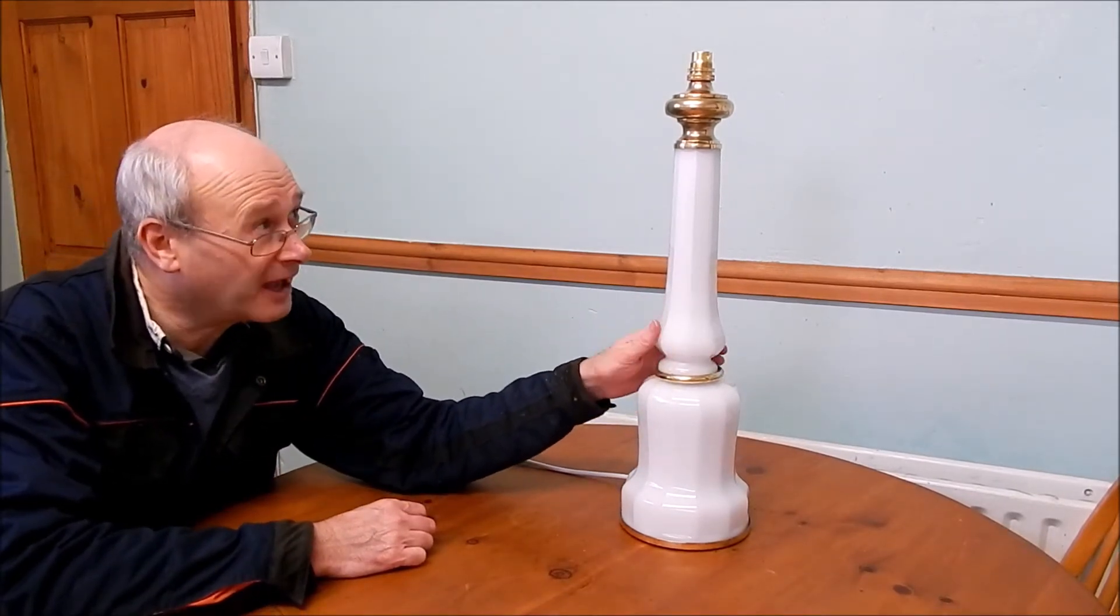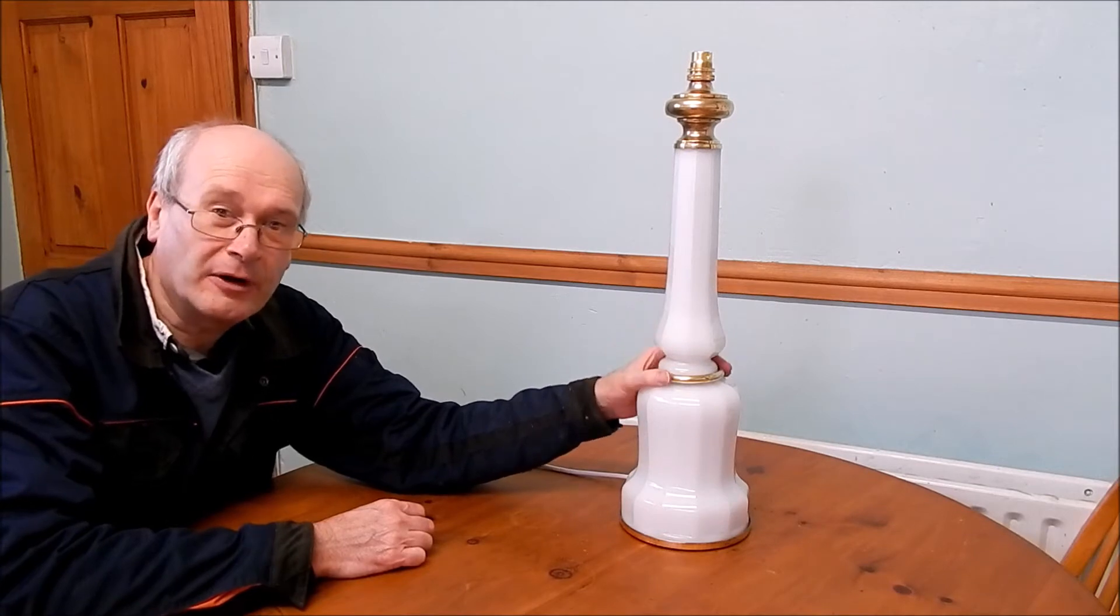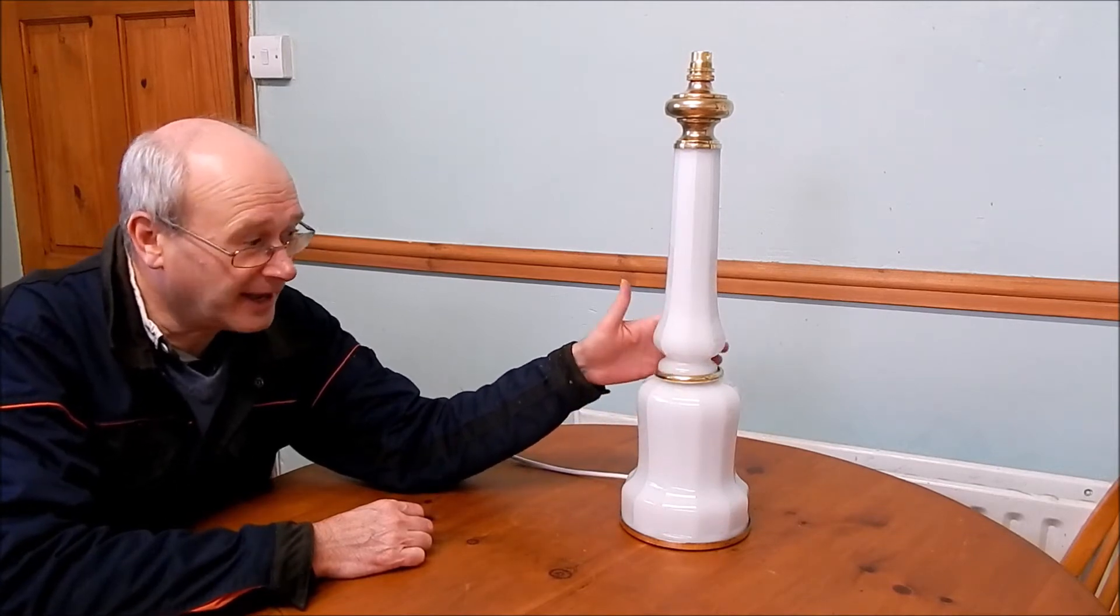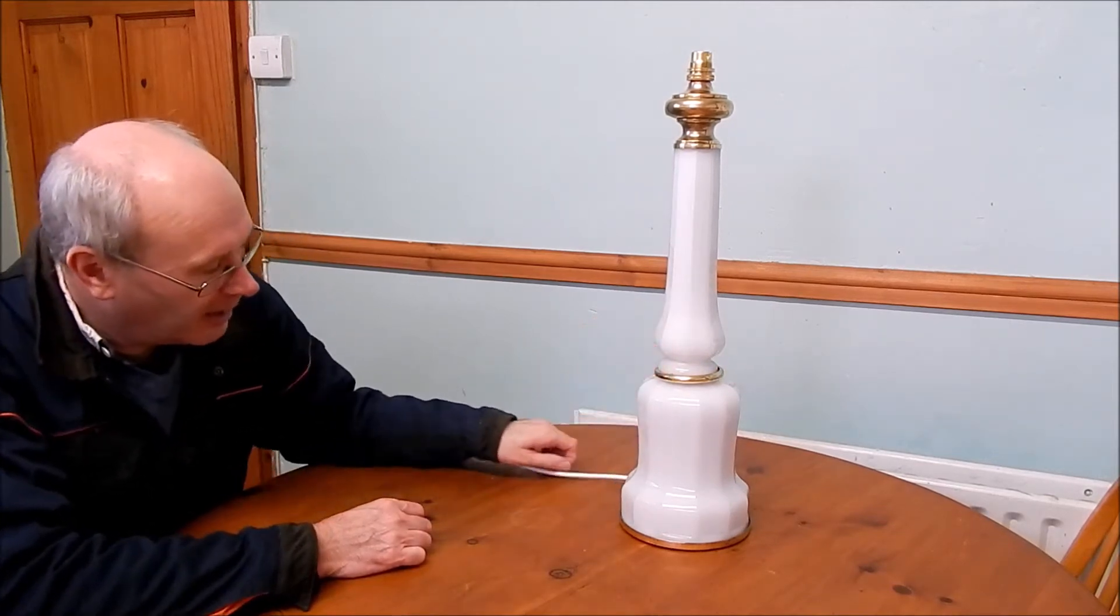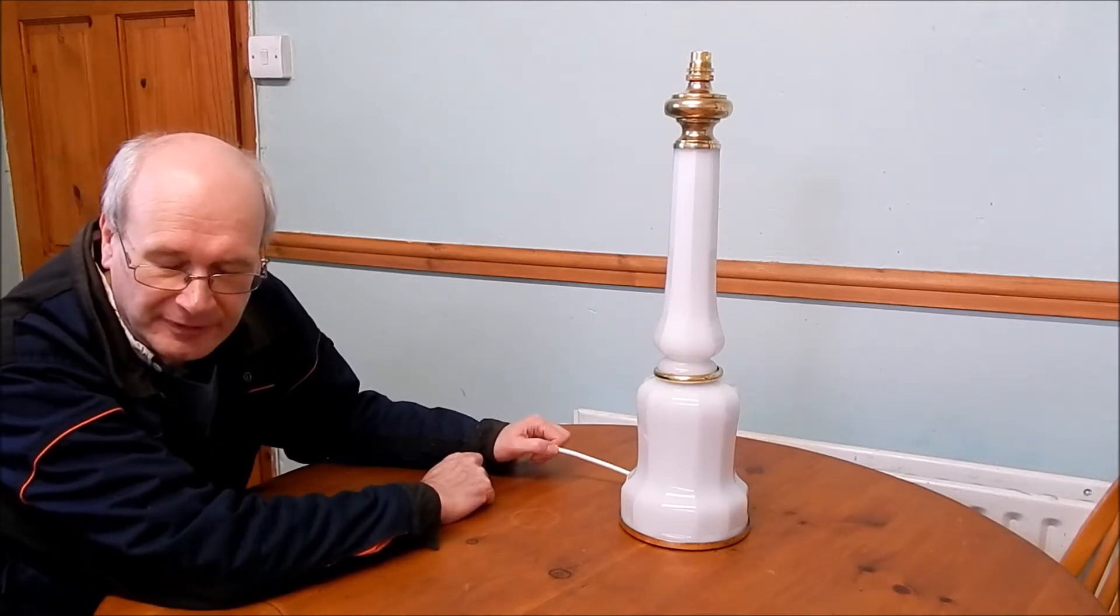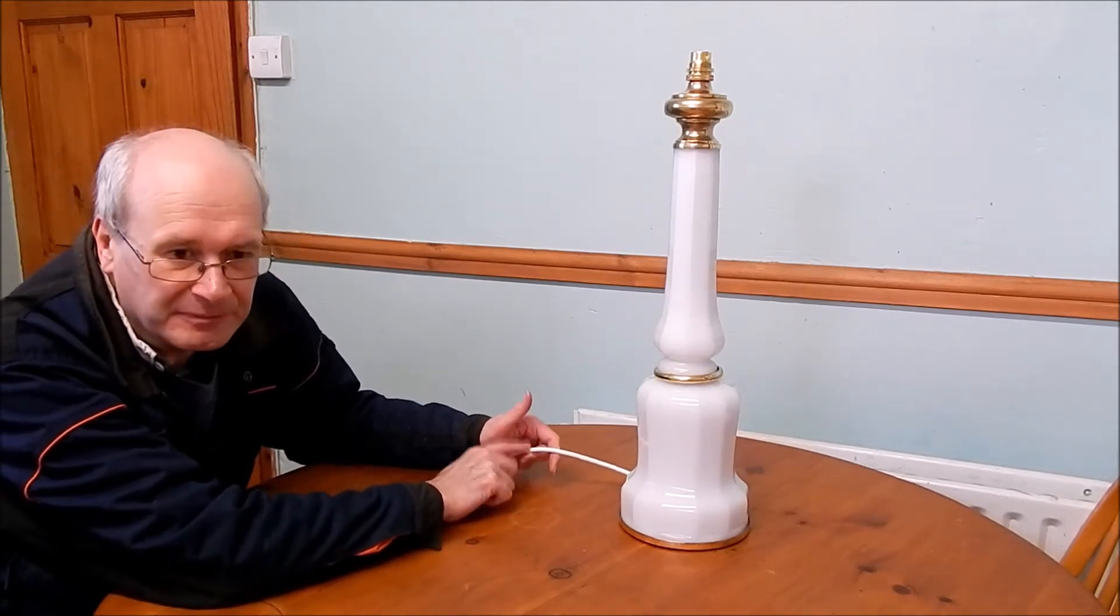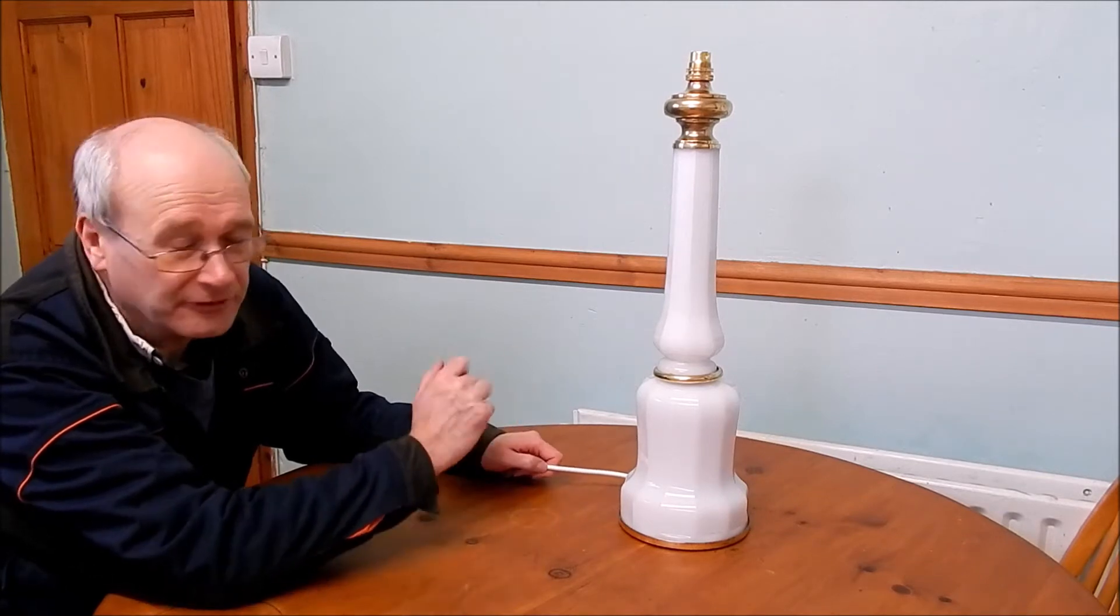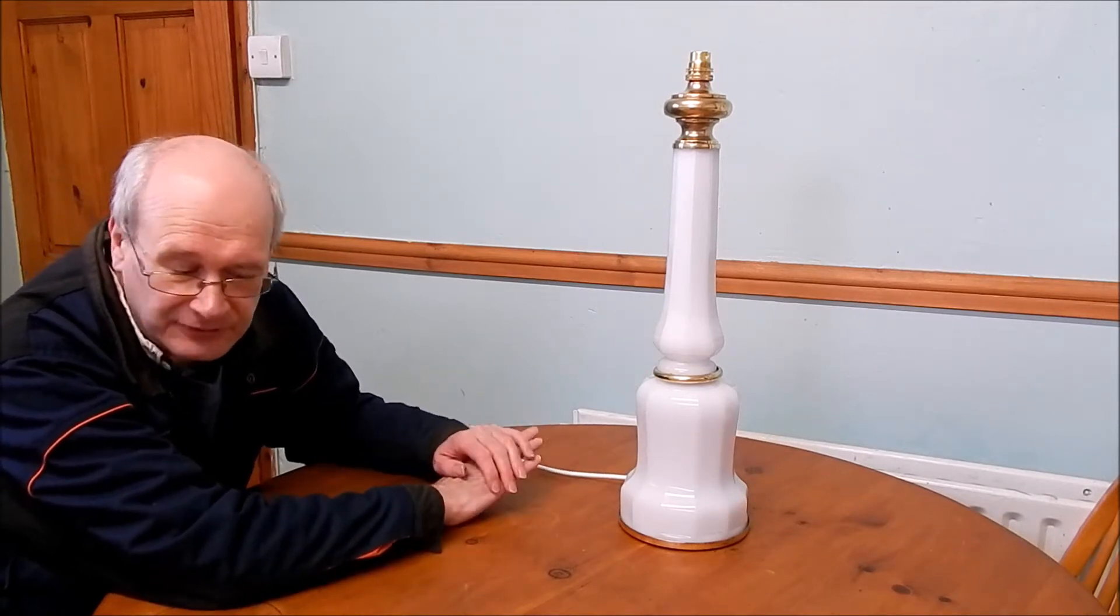This is an old table lamp. I've had it for many years. What I'm going to do now is convert it into a dimmable version by using a cord dimmer to put it in the middle of the circuit in the mains cable. So I'm going to show you what we need to do for that and how to do it.